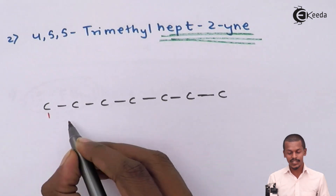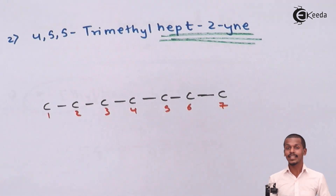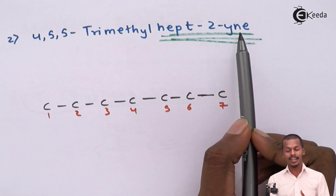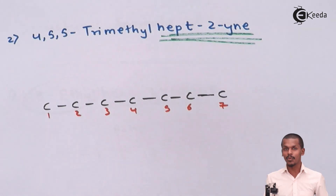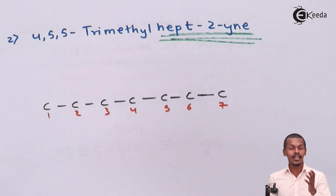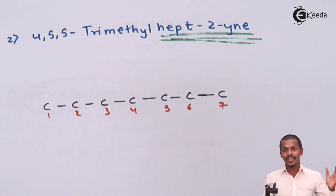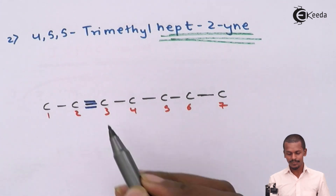After numbering 1 through 7, we observe the number between 'hept' and 'yne', which is 2. This 2 represents the position of the carbon-carbon triple bond, indicating where it originates. The carbon-carbon triple bond is between carbon number 2 and carbon number 3 — not between carbon 2 and carbon 1 — always moving in the direction of the numbering from one end to the other.